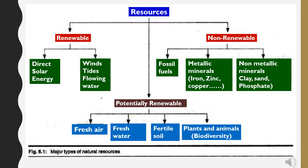Here we have shown the diagram of resource classification. Resources are classified in two categories: first, renewable resources, and second, non-renewable resources. Under renewable resources, there are direct solar energy, winds, tides and flowing water. In case of non-renewable resources, there are fossil fuels, metallic minerals like iron, zinc, copper, etc., and non-metallic minerals like clay, sand, and phosphates. There are also potentially renewable resources like fresh air, fresh water, fertile soils, plants and animals, etc.